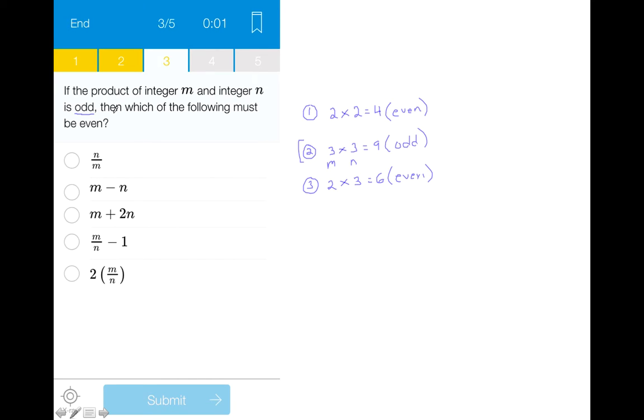Then which of the following must be even? The best way to approach this is just to test each case by putting in theoretical odd numbers. We can assume for the first one, just to make the math easy, that n and m are equivalent. So we'll do 3 over 3 equals 1, which is an odd number, therefore answer choice A is actually incorrect.